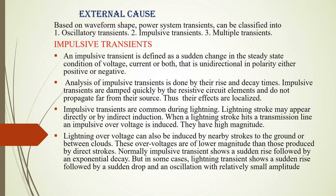Now coming to external causes. Based on the wave shape, power transients are classified into three types: oscillatory transients, impulsive transients, and multiple transients. The best example of an impulsive transient is lightning. During a direct stroke, when lightning strikes directly on a transmission line, an impulsive transient is created — it starts at a very high voltage and reduces to a lower value.